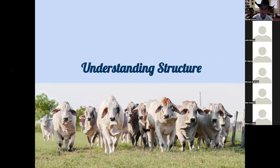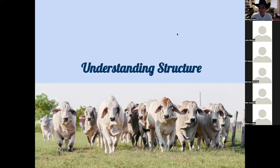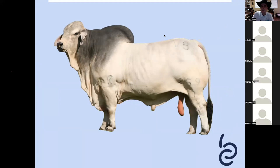Structure is the most challenging and subjective part of livestock evaluation, but it might be the most important and most valued skill set. As we improve science and take EPDs and genetic testing further, the one thing we still have not figured out how to handle with a computer or statistics program is structural soundness. There is no number that tells you sound or not sound, which is why you need to develop yourself as a trained evaluator.